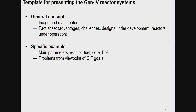When presenting the six systems, the template includes: first, a general concept image and main features; then a fact sheet with advantages, challenges, design developments, and reactors under development and operation. For every system, one specific example is selected to give more design details, covering main parameters, reactor fuel, core, balance of plant, and finally the problems from the viewpoint of GIF goals, followed by the possible solution leading to the next system.